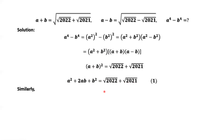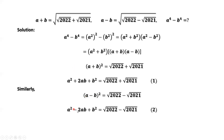Similarly, we take squares on both sides of the second equation. The left-hand side equals A squared minus 2AB plus B squared. The right-hand side is the square root of 2022 minus the square root of 2021, all squared.